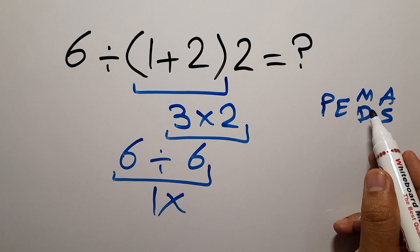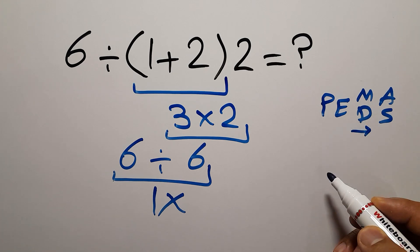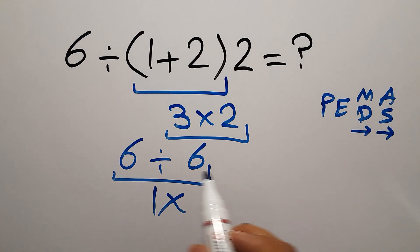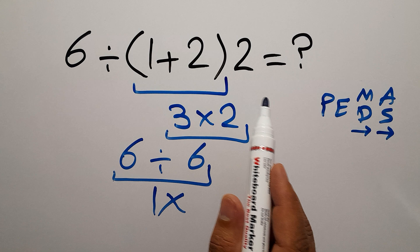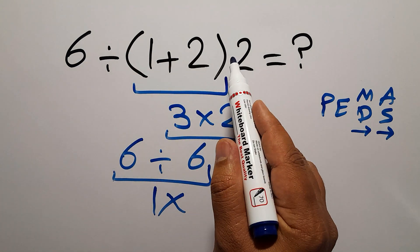Remember that multiplication and division have equal priority and we have to work from left to right. The same applies to addition and subtraction. So here in this expression we have one division, one parentheses, and one multiplication.